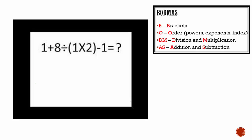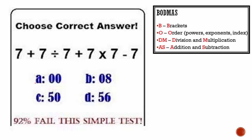Next — this is a tricky one. Now we have brackets in this one so we do the brackets first. There is no order so we do division and multiplication after, then addition and subtraction. We start with the brackets. 1 plus 8 divided by 1 multiplied by 2 is 2, then minus 1. Now we do division first: 8 divided by 2 is 4. So 1 plus 4 is 5, 5 take away 1 is 4.